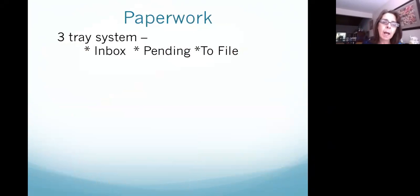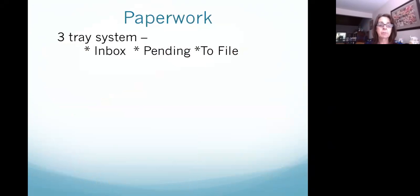Let's talk about paperwork. I like to have a three-tray system: an inbox, a pending or working-on file, and a to-file. Everything that comes into my house goes into the inbox. Sometimes things can be dealt with right away in just a few seconds — if so, deal with them right away. Otherwise they go into the inbox. It's really important that your inbox is not too big, because you want to be constantly going through it. If the box is too big, you could ignore it until it becomes overflowing, and that's not a helpful system.